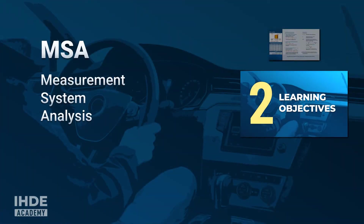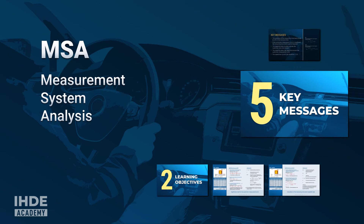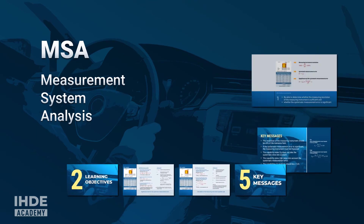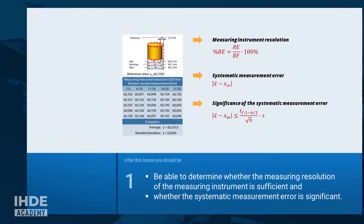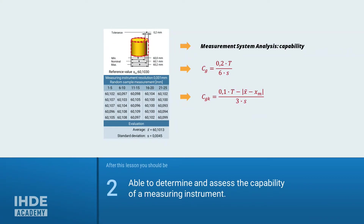In this lesson, we calculate the systematic measurement error, carry out the significance test, and calculate the measuring instrument capability. This lesson has two learning objectives. You should be able to judge whether the measurement resolution of a measuring instrument is sufficient, and you should be able to calculate the systematic measurement error including a significance test. Furthermore, you should be able to determine and assess the capabilities of a measuring instrument.